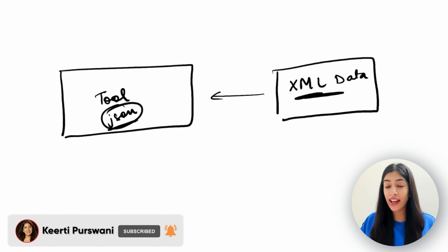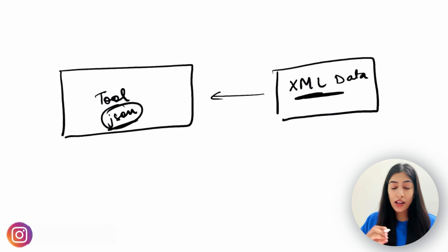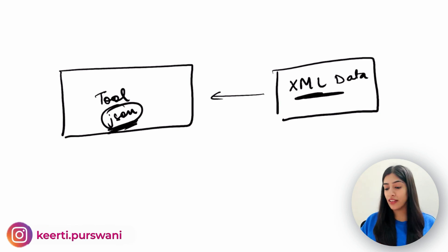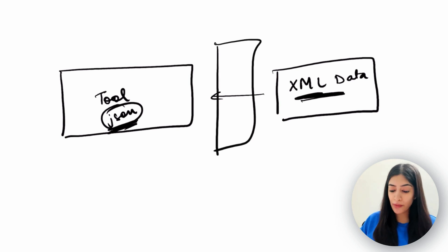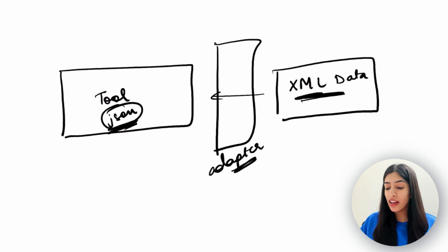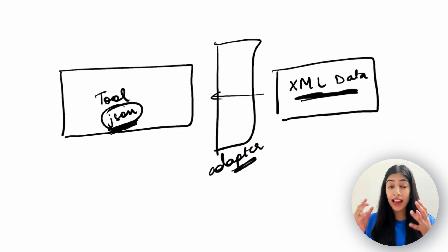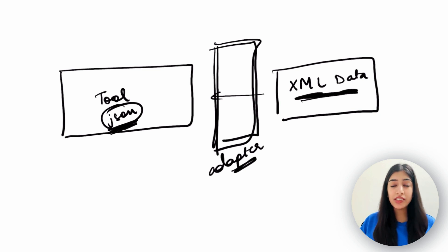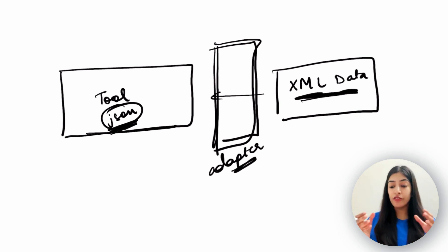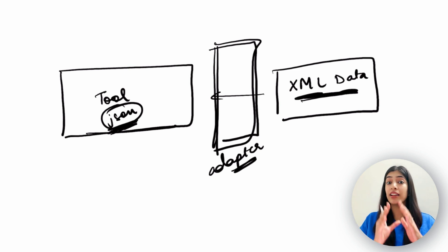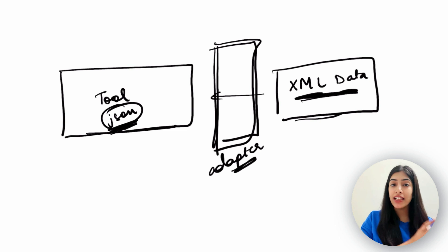Our tool can actually analyze the data — it is very good at it — but the only problem is that it expects data in JSON and we have it in XML. So what I'm going to do is put an adapter in between. I'm going to use the adapter design pattern to convert the XML data to JSON and then feed it to the tool. When we do so, the client is not going to know that there is an adapter in between. Just as it was going to send the data to the target, it will say 'analyze this data' very smoothly, without the client realizing there is an adapter in between.